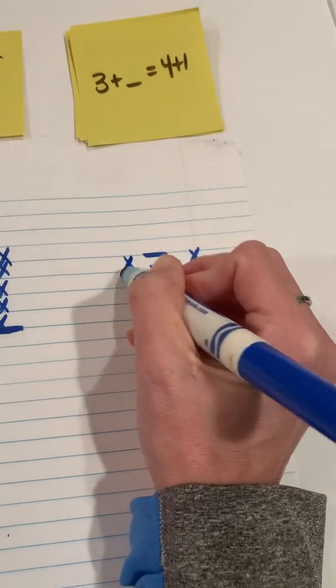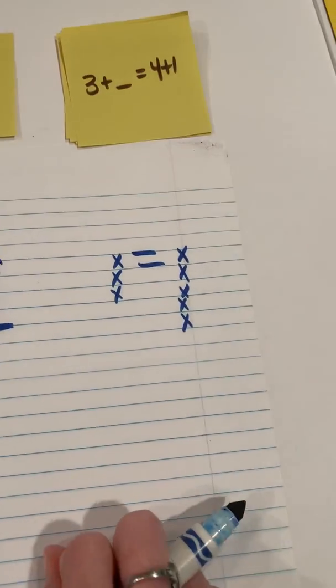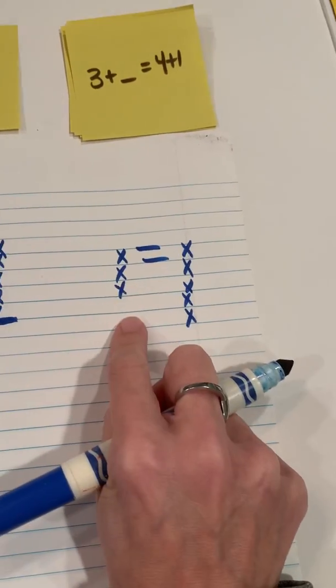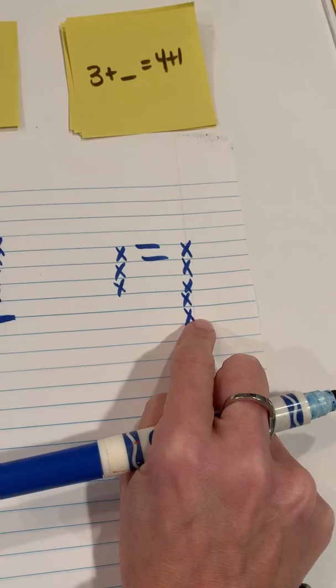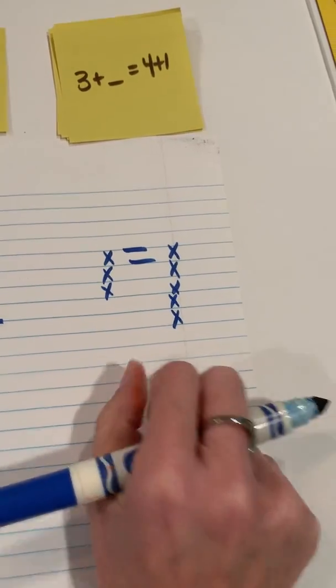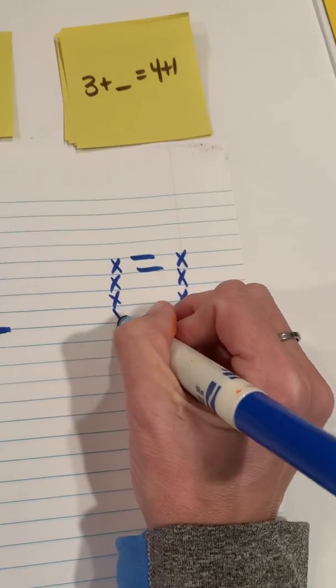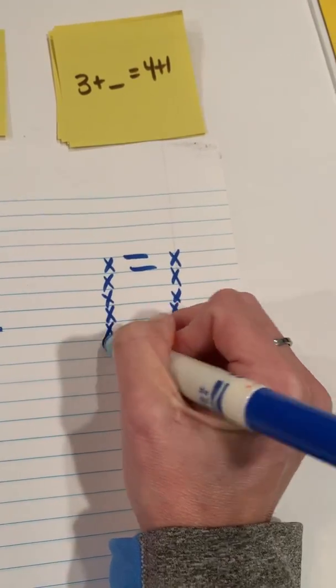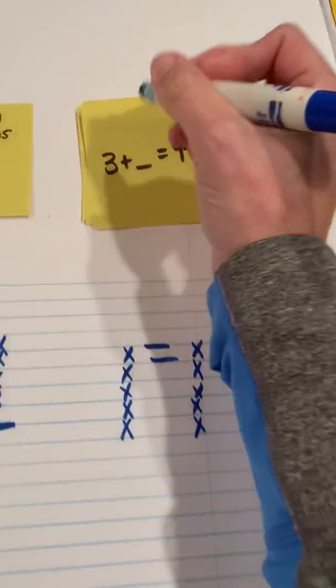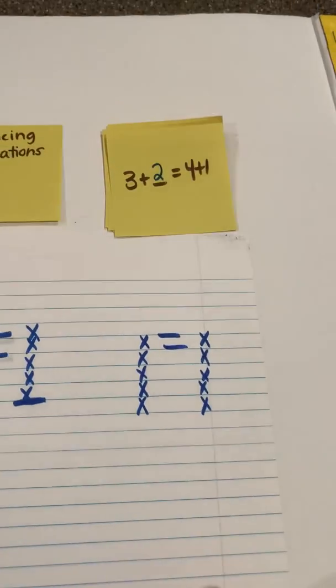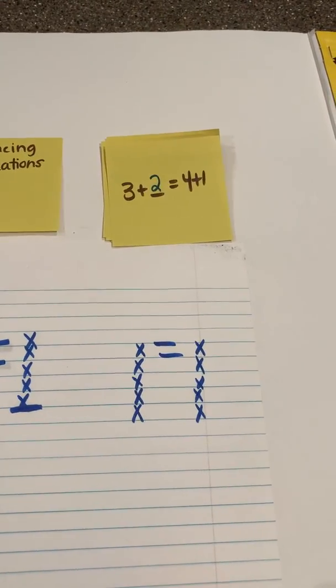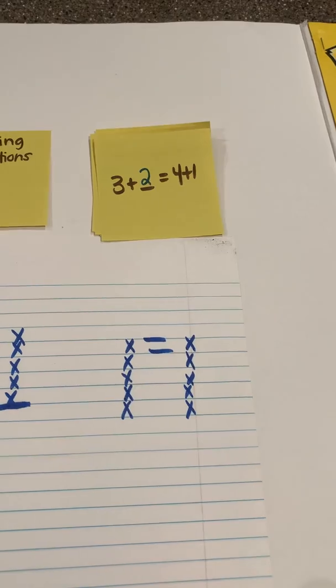And I've got to think about what number I'm going to add to 3 so that it's the same as or equal to 4 plus 1. So once again, they can use a different color. I'm just going to use the same color here. I added 1, and I added 2. So 3 plus 2—to make that true, you have to put a 2 in to equal 4 plus 1.